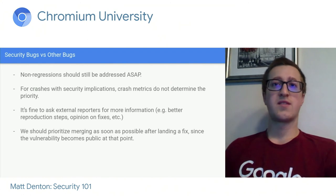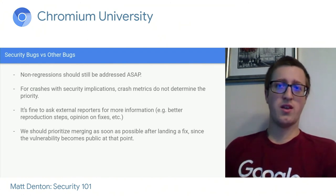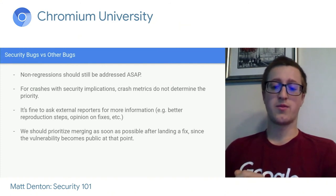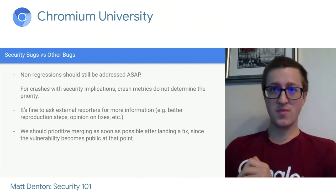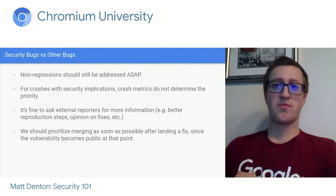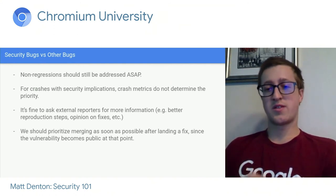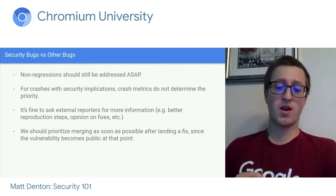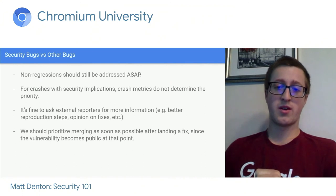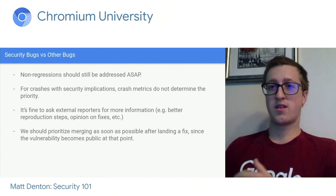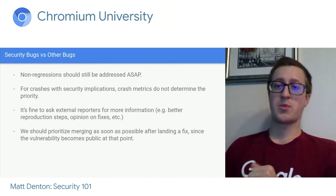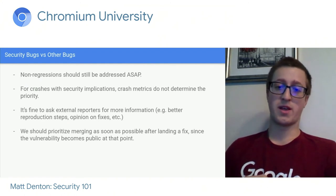Security bugs are not the same as normal stability bugs. If a non-security bug hasn't been fixed for a while, there's a valid argument we can live with it for one more release. That's not true with security bugs — the longer the bug exists, the longer our users are vulnerable, and the more likely it is to be found by an attacker. Crash metrics don't matter for judging the severity of a security bug. Even if it's only happened twice, an attacker could make that bug happen because we have to be correct under active sabotage.